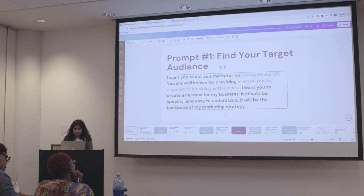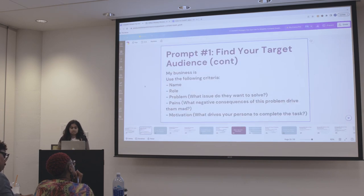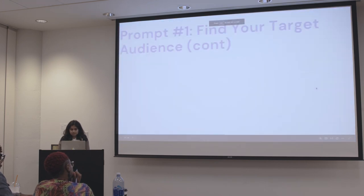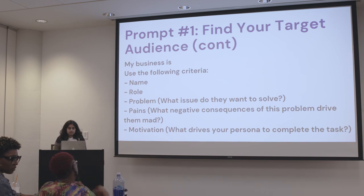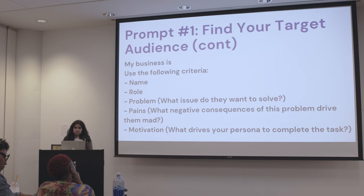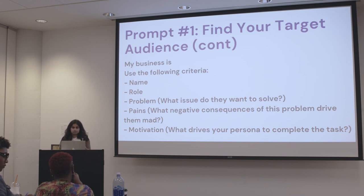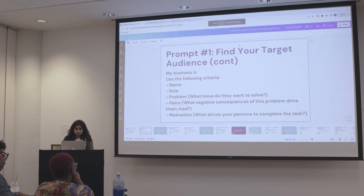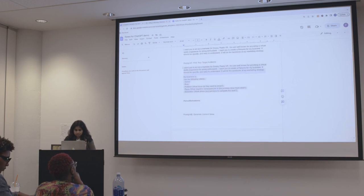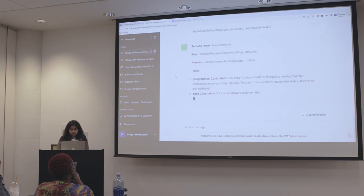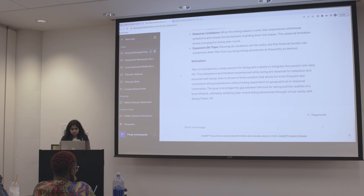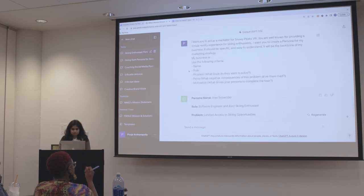I'm going to add another part to the prompt where it reads: 'My business is [X]. Use the following criteria: name, role, problems, pains, and motivations.' By doing this, you're telling ChatGPT this is my business and you're defining the structure — ChatGPT is not relying on its own structure. So using the same prompts but with the second part added, you can see it's now structured exactly to the format we gave ChatGPT.